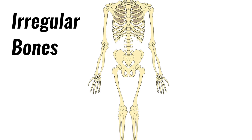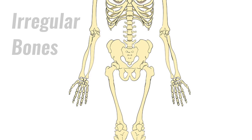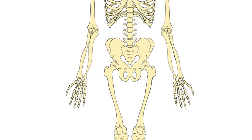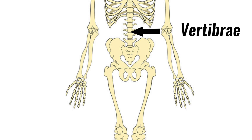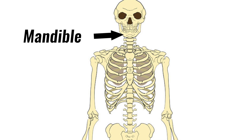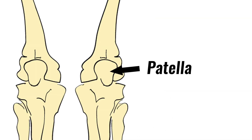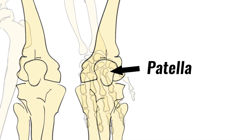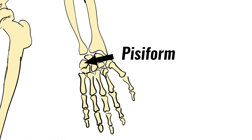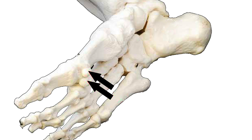Irregular bones are those which do not fall into any other category. Examples of irregular bones are the vertebra, the sacrum and mandible or jaw bone. Sesamoid bones are small seed-like bones embedded within a tendon. The most obvious example is the patella or kneecap. Other sesamoid bones are the pisiform in the wrist and the two small bones at the base of the first metatarsal under the ball of the foot.